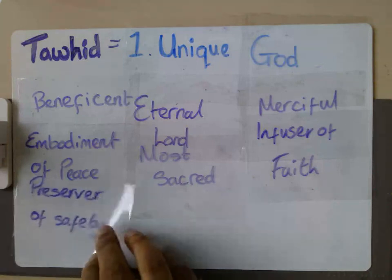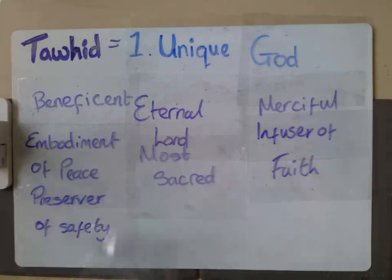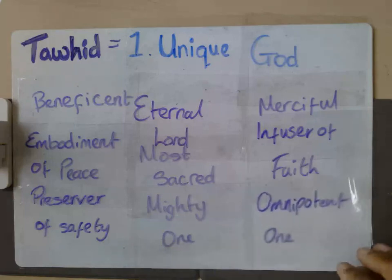So even though there's 99 in Islam, none of them really, and even all of them combined, do justice to what God is according to Islam.